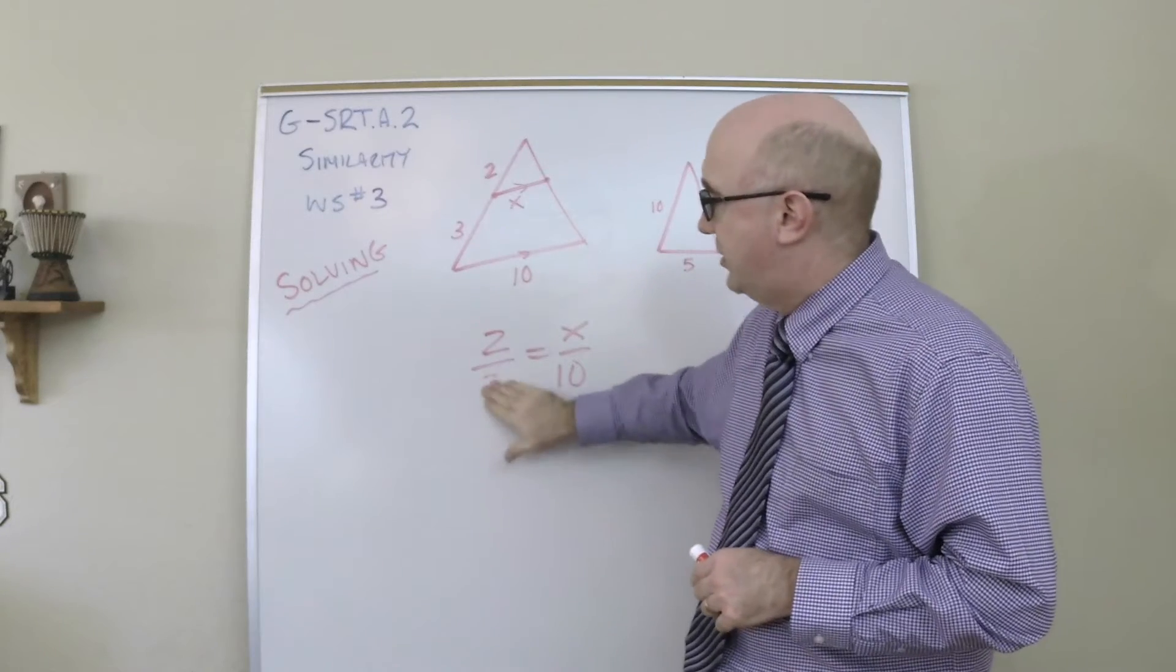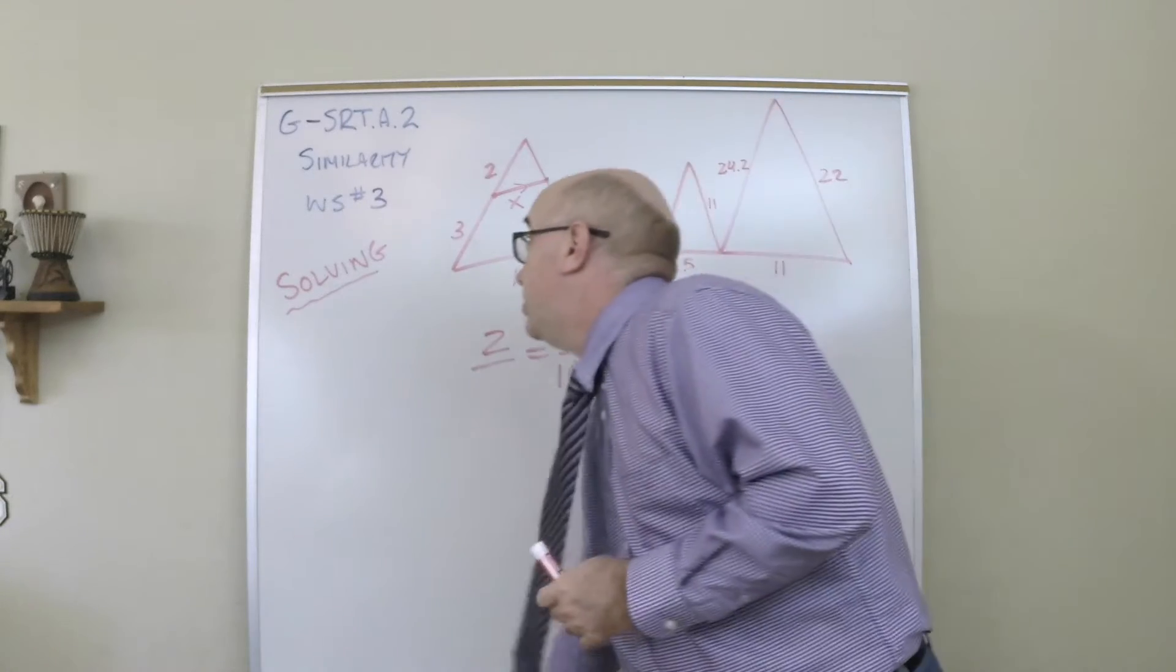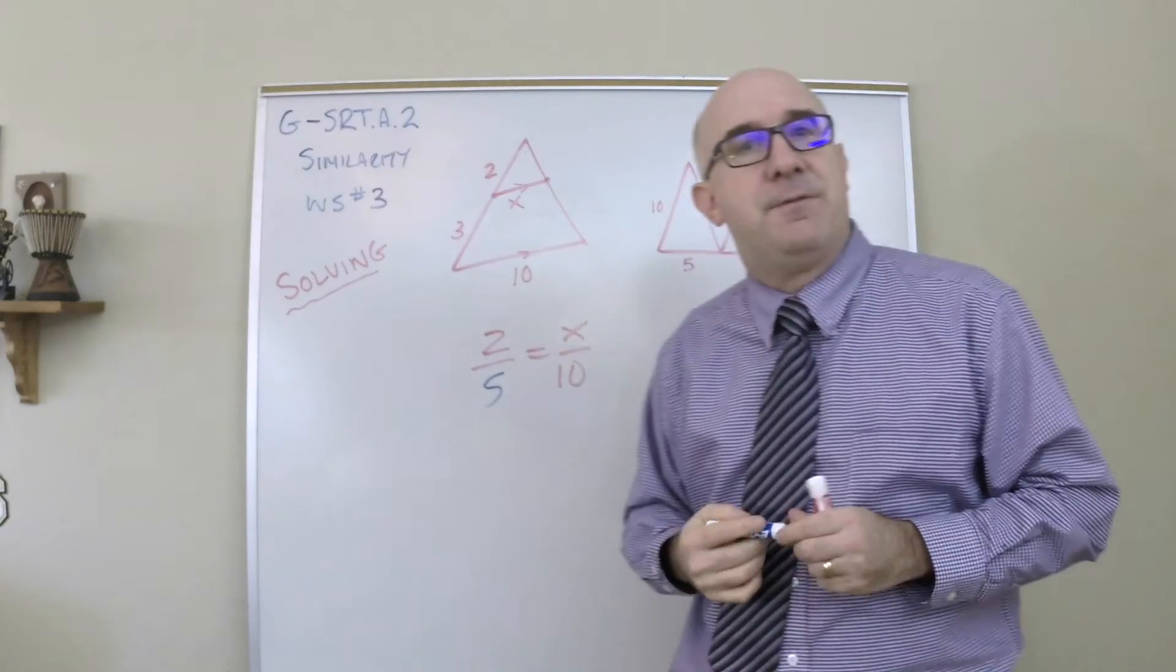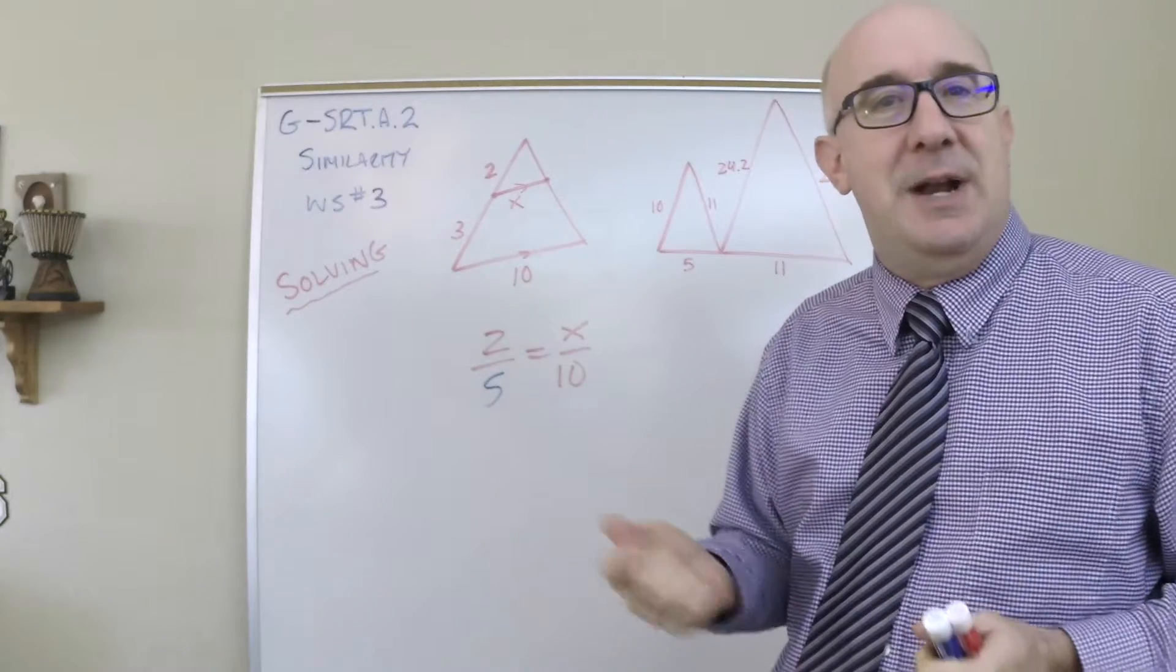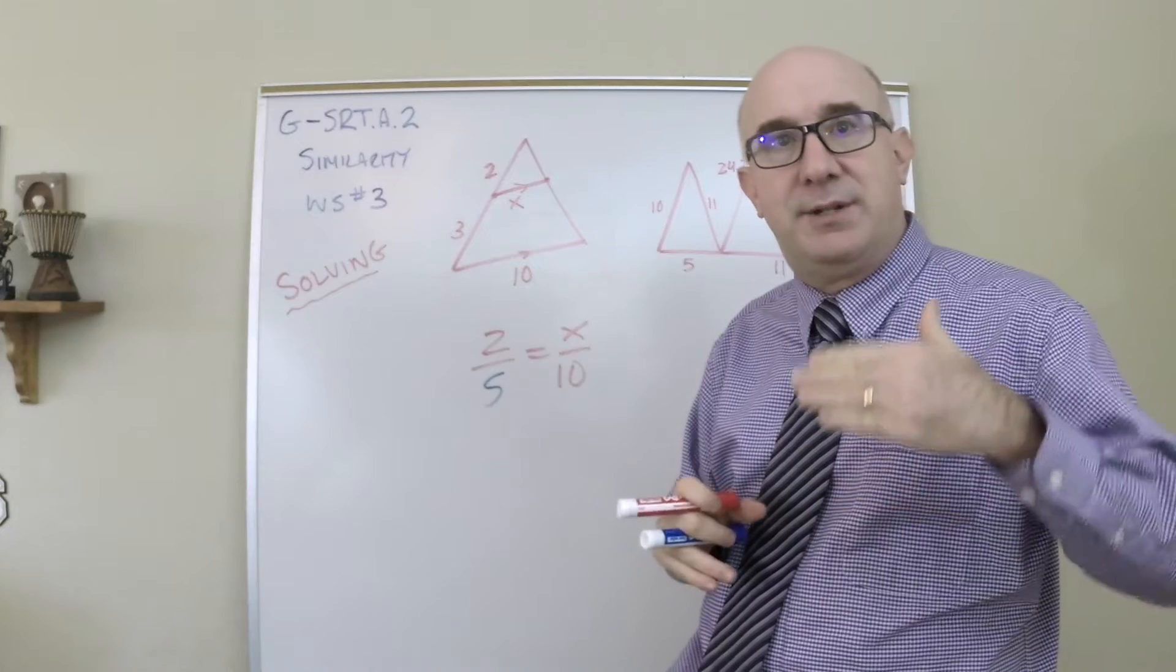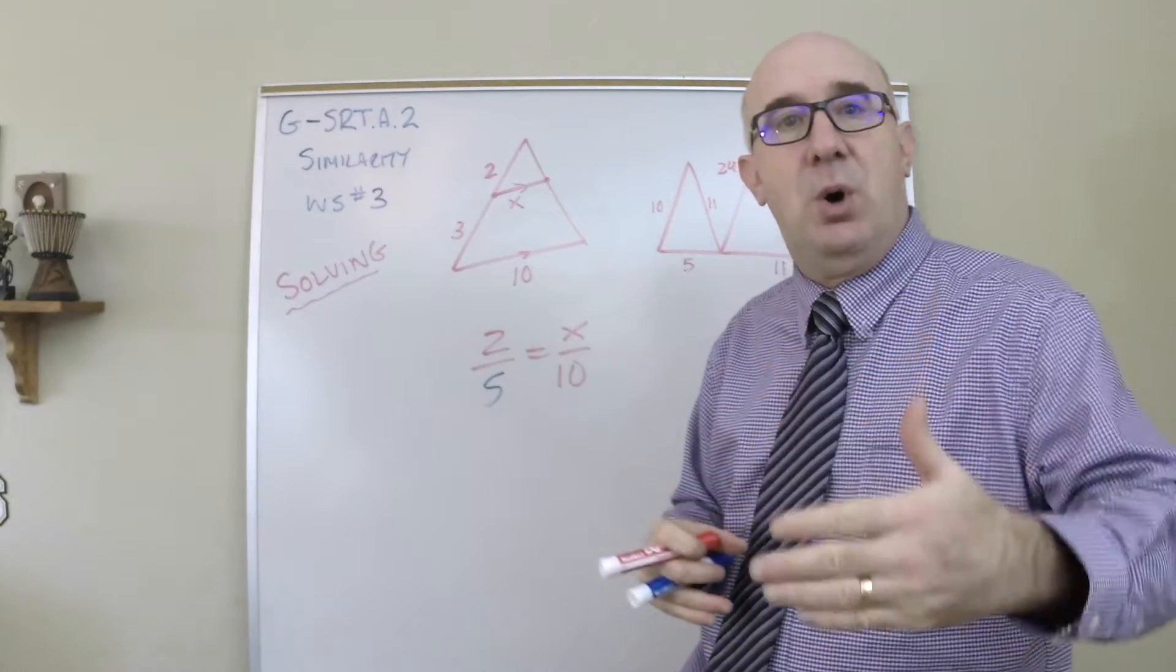The correct ratio actually would be two is to five. And you say, whoa, where does five come from? When you and I did the ratios earlier on a previous worksheet, we learned that sometimes we want to compare a part to its whole.